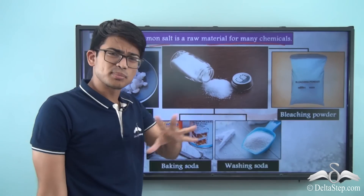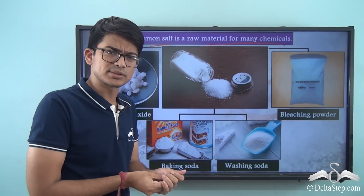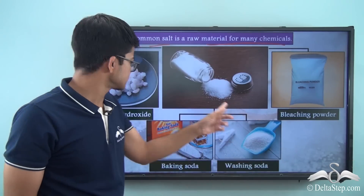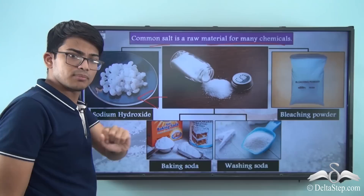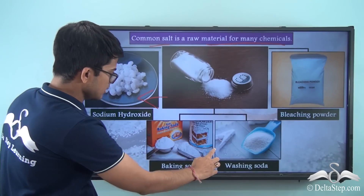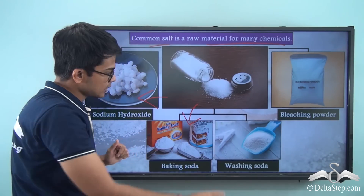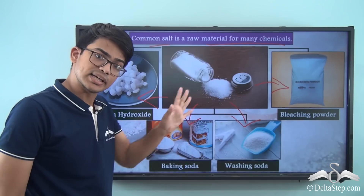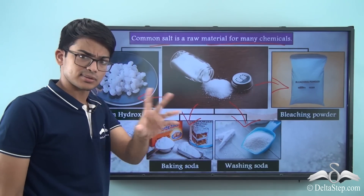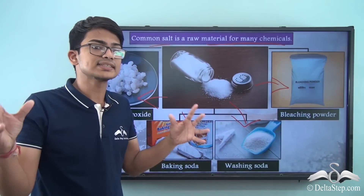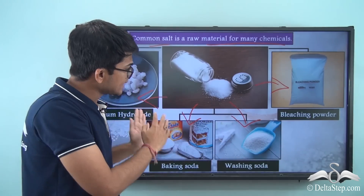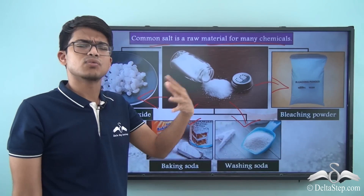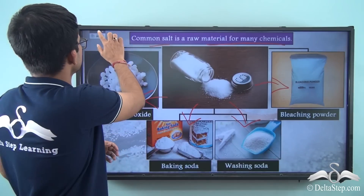Common salt is a raw material for many chemicals. It's not just used for taste in food - a variety of daily-requirement things can also be made from it. These include sodium hydroxide, baking soda, washing soda, and bleaching powder. Various things of daily use can be made through common salt, NaCl. Since it contains sodium and chloride, it can be used to manufacture different sorts of products.